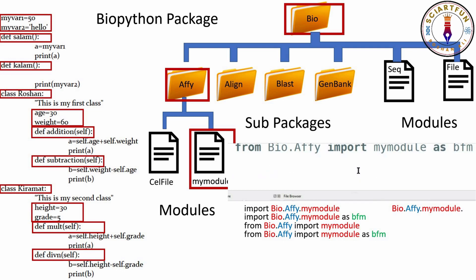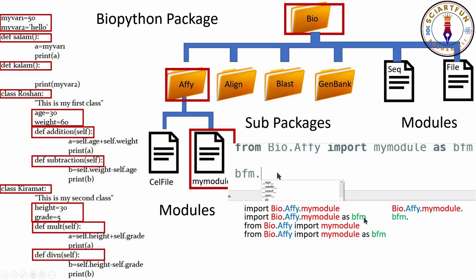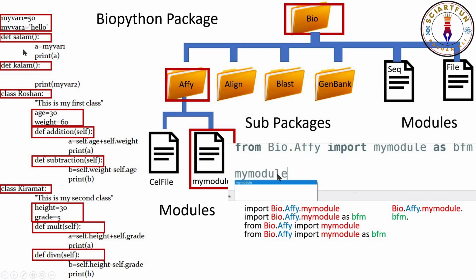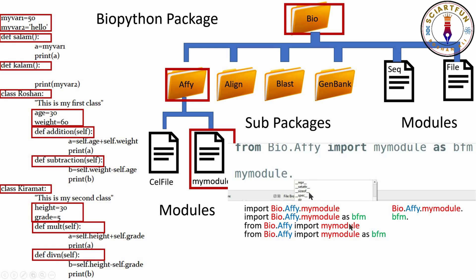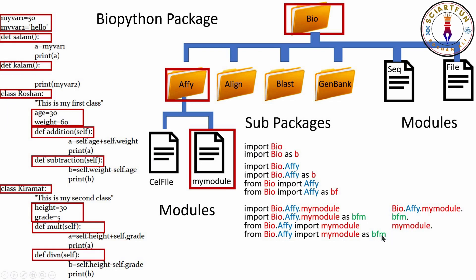As you can see, these things are appearing in front of this command. If you imported your module as bfm, just type 'bfm.' and all the contents will appear. If you imported using the from-import method, type 'my_module.' and the contents appear. If imported and renamed as bfm, type 'bfm.' again and put a dot.